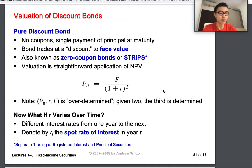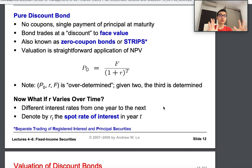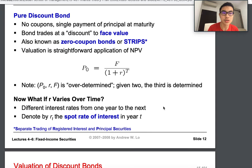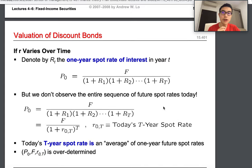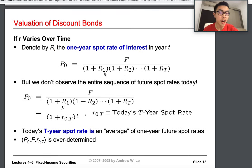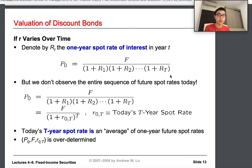But what if r varies over time — different interest rates for different years? Then we denote r_t as the spot rate of interest in year t. The spot rate is simply the interest rate between two consecutive years: year t and year t minus one. If r varies over time, the denominator of our NPV formula becomes the product of (1 + r₁)(1 + r₂)...(1 + r_t) for all relevant periods.